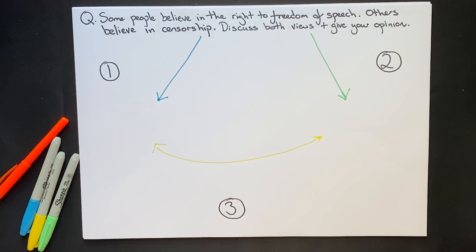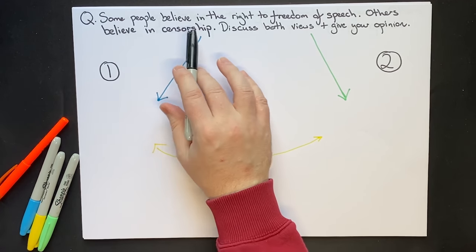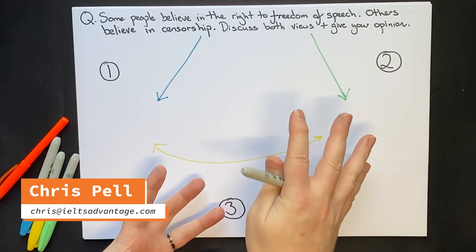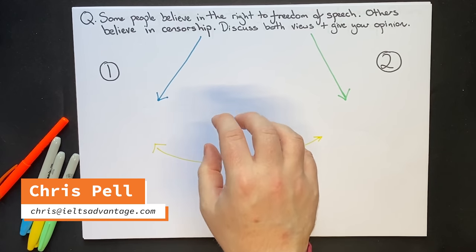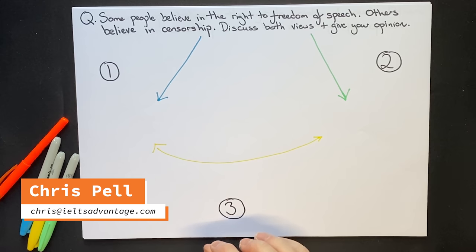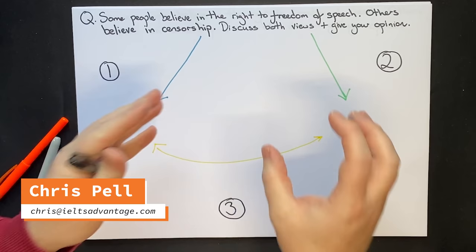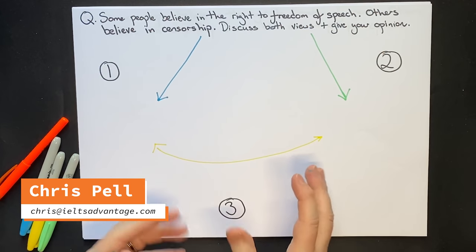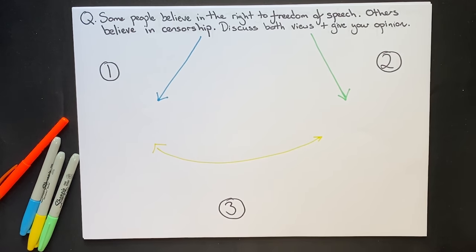Chris here from IELTS Advantage. In this video we're going to look at discussion questions — also called 'discuss both views' questions — and we're going to think about how to think clearly about these questions and then how to take our thoughts and structure them into a band seven, eight, or nine essay.